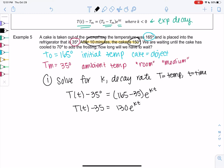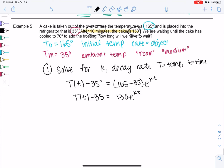So we will use the fact that at 10 minutes, the temperature is 150. So T of T is 150 degrees. And we'll use this to solve for K. And then we can answer the final question.